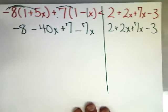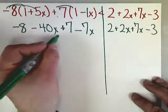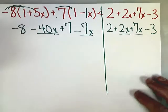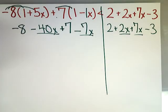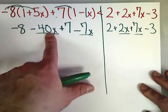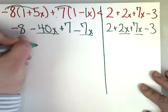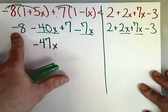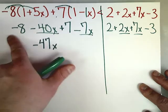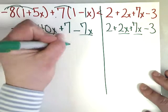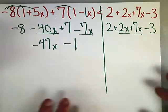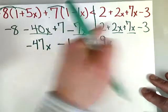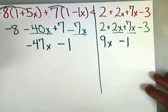From this step, the next step is clean your room, so we're going to combine any like terms we happen to find on the same side of the equation. Negative 40 minus 7 gives me negative 47x. Negative 8 plus 7 would be negative 1. 2 plus 7x is 9x. 2 minus 3 is negative 1.